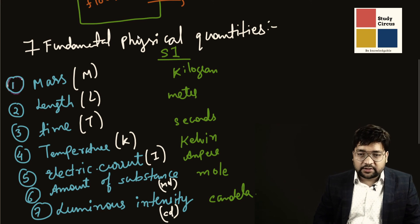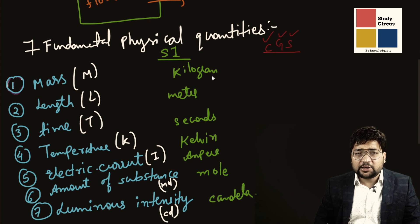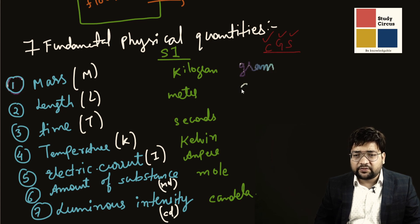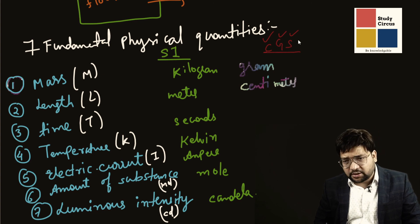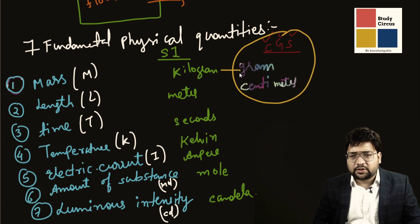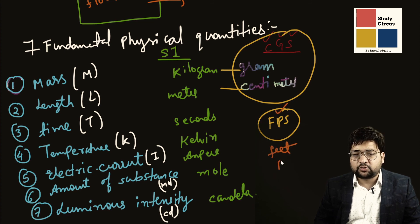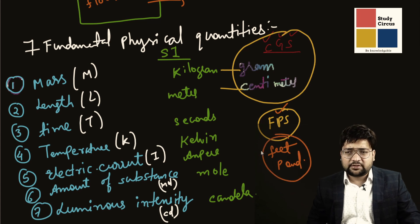For example, there is the CGS system — centimeter, gram, second system. Instead of kilogram as the unit of mass, they take gram; instead of meter, they take centimeter; for time they take second. There is also the FPS system — in FPS, for length you take foot or feet, and for mass you take pounds. So different unit systems exist.